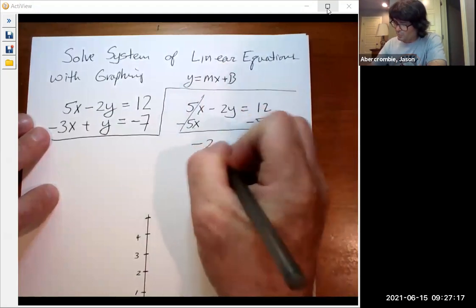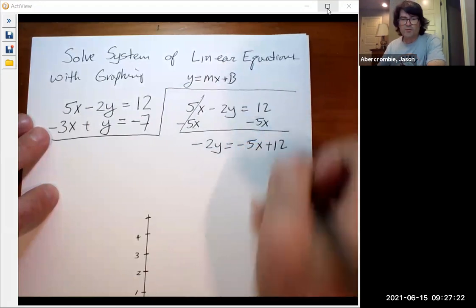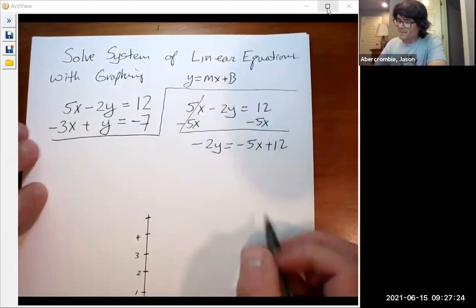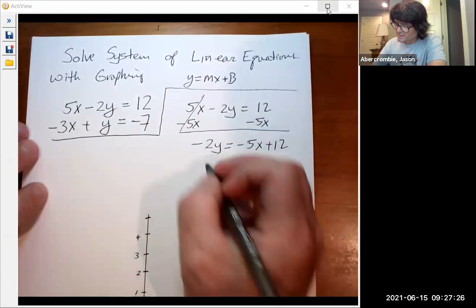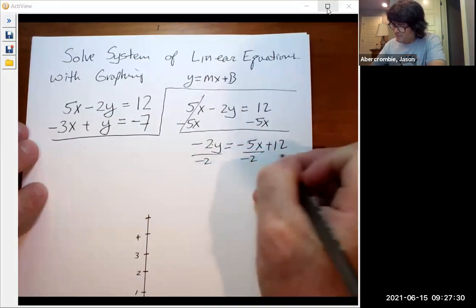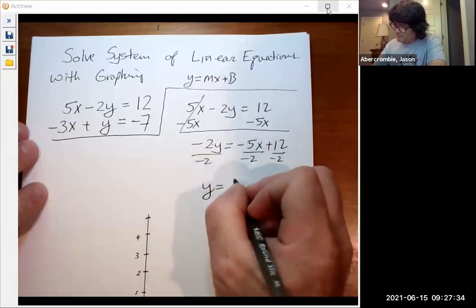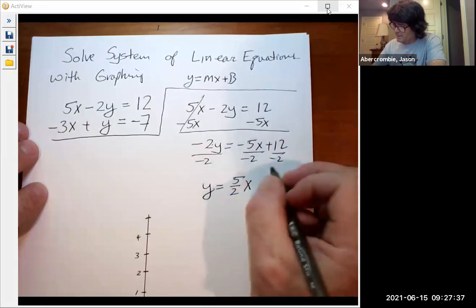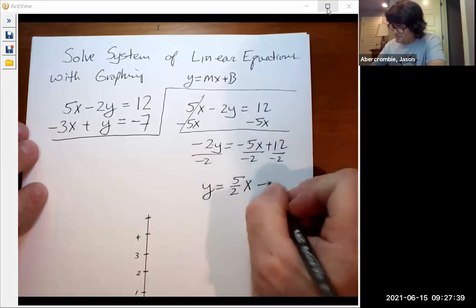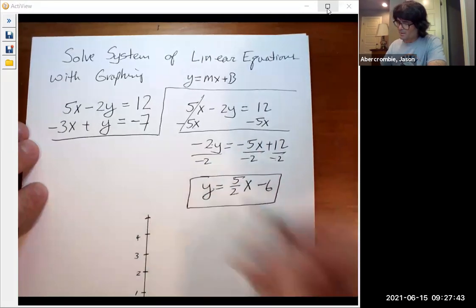Those cancel out. Now you get -2y is -5x plus 12. And then to get rid of this -2, since it's -2 times y, we're going to divide everything by -2. So you get y equals a slope of 5/2 times x, and then 12 over -2 makes -6. I'm going to put a box right there.